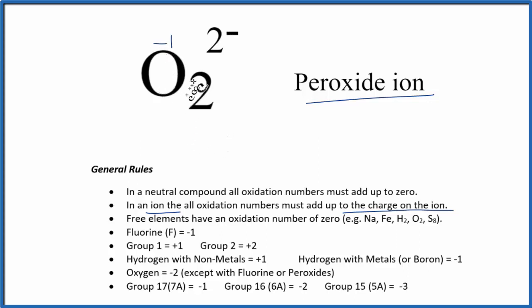But either way, the oxidation number for each one of the oxygens in O₂²⁻ is minus 1. We're used to oxygen having a minus 2 oxidation number, with two exceptions, and one of them is the peroxides, which we're talking about right here.